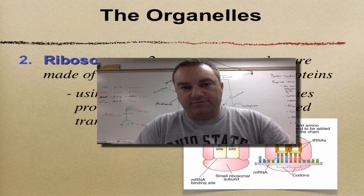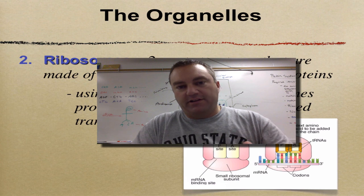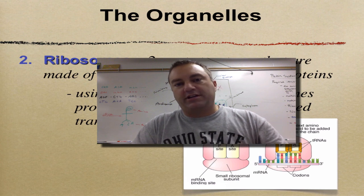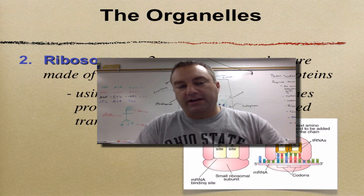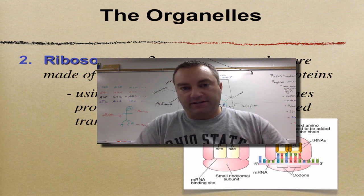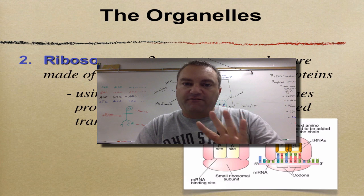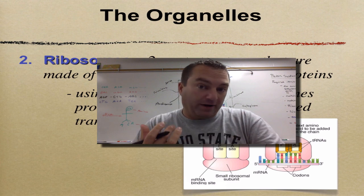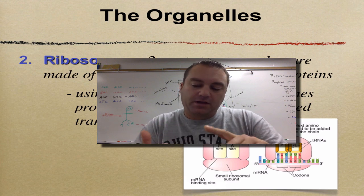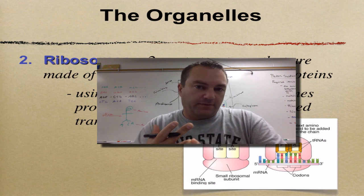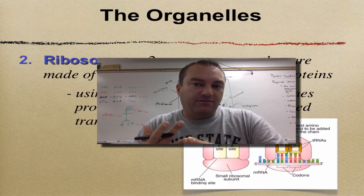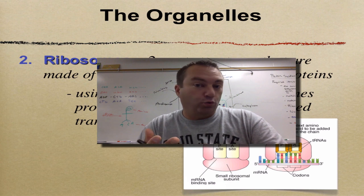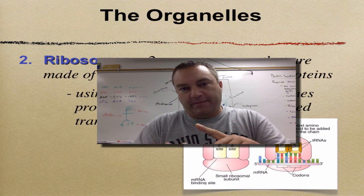Welcome to episode 5 from chapter 7. In this episode we're going to continue our study of the different organelles, and we're going to focus on four different things: ribosomes, the two types of ER — rough ER and smooth ER — and then vesicles.